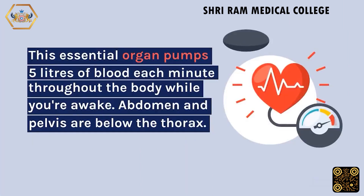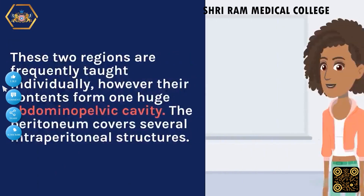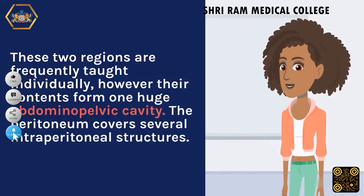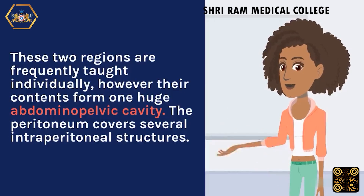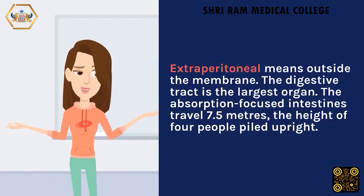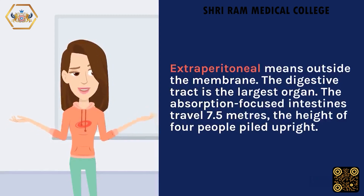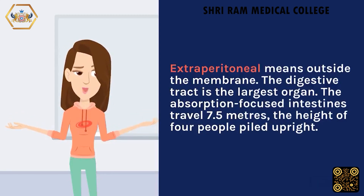This essential organ pumps 5 liters of blood each minute throughout the body while you're awake. The abdomen and pelvis are below the thorax. These two regions are frequently taught individually; however, their contents form one large abdominopelvic cavity. The peritoneum covers several intraperitoneal structures, while extraperitoneal means outside the membrane. The digestive tract is the largest organ, with absorption-focused intestines traveling 7.5 meters — the height of four people piled upright.